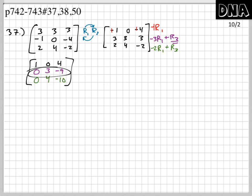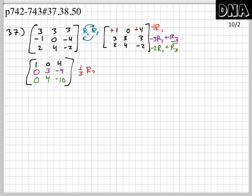Looking at column 2, I need the pivot to be a 1. To make that 3 a 1, I divide by 3 — multiply row 2 by 1/3. So 1/3 × 0 = 0, 1/3 × 3 = 1, 1/3 × (−9) = −3. The new row 2 is 0, 1, −3. Now I have leading 1s in rows 1 and 2.